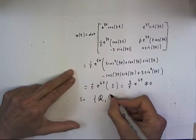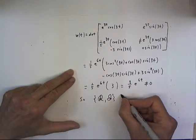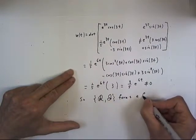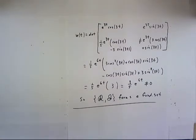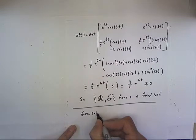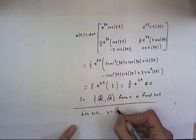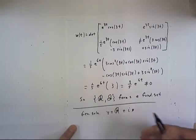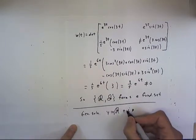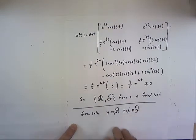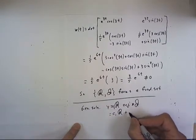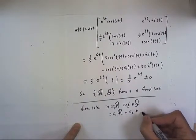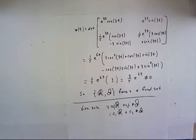So script R, script I forms a fundamental set. This means that any solution to the differential equation can be formed by linear combination. I need a C1 here and a C2 here. Let me write that out just a little better. C1 times R plus C2 times I. And we don't need the imaginary number, the I there.